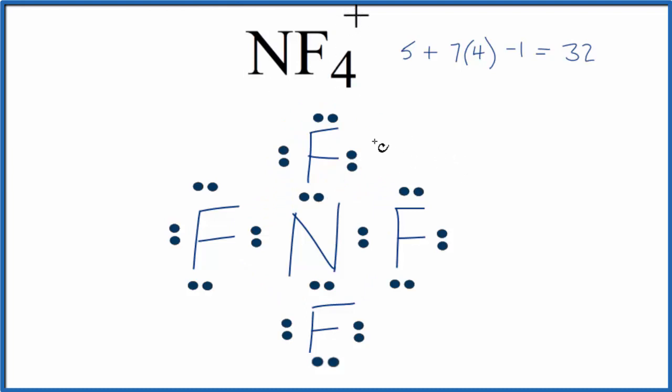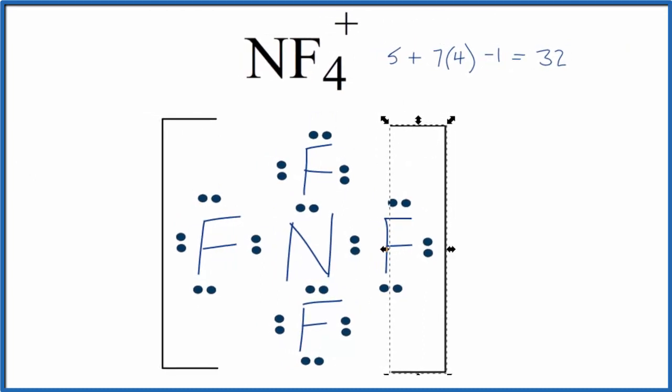Because it's an ion, let's put brackets around it, and then put a positive sign outside the brackets. So this is the Lewis structure for NF4+, and this is Dr. B.